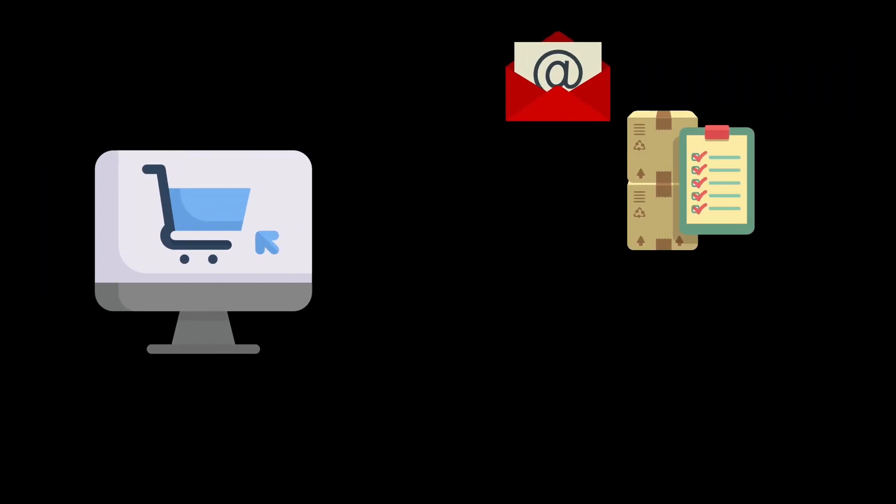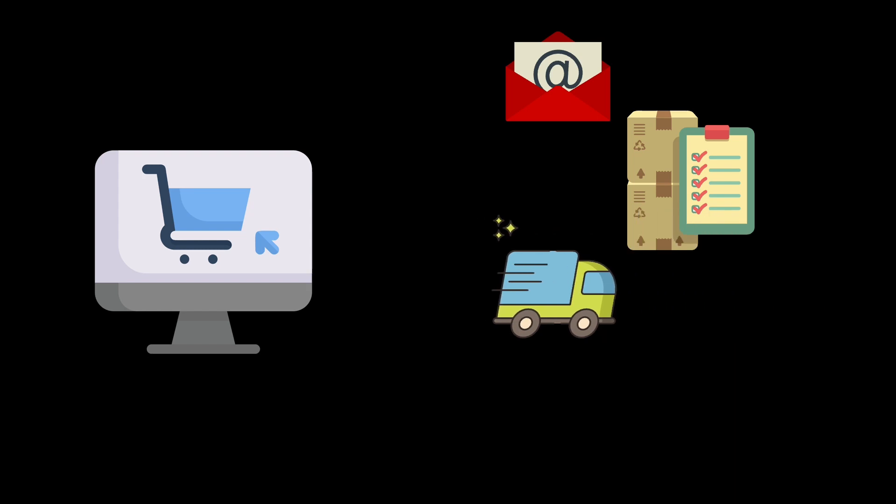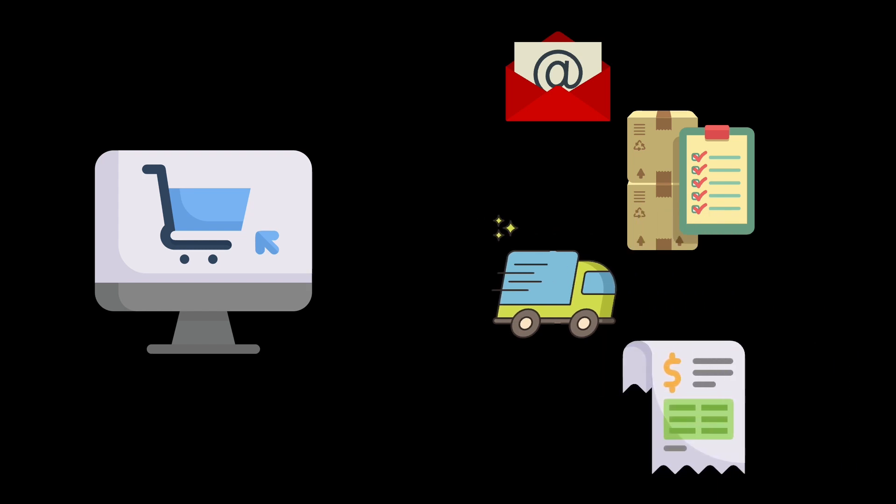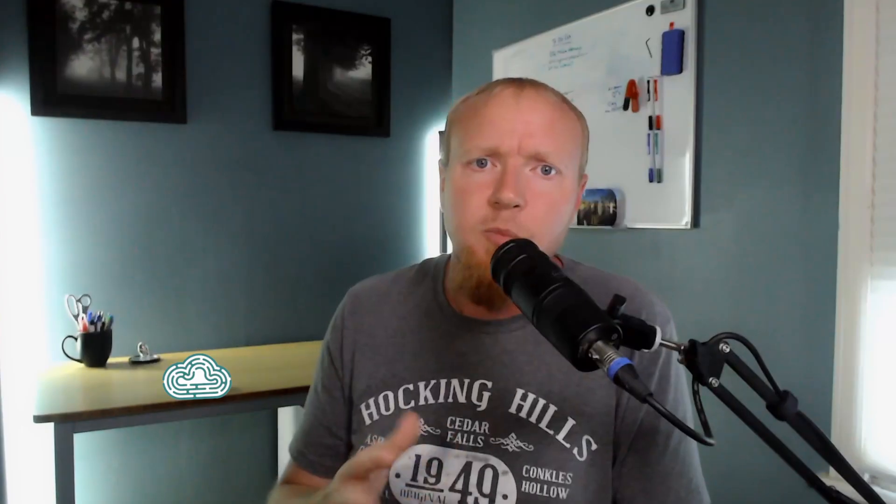So it looks like we need five services to make all of this work: one, the e-commerce system itself; two, a service that sends emails; three, an inventory control system; four, a fulfillment service; and five, an order history.